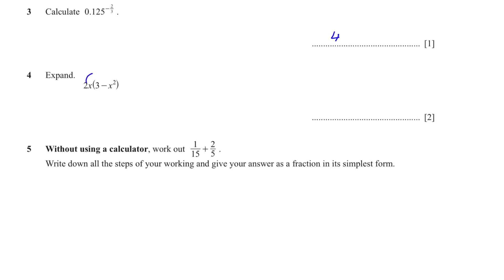Question 4: We have to expand the bracket. We multiply 2x by 3, which gives us 6x, and then 2x multiplied by negative x² gives negative 2x³. When we multiply variables that have exponents, we add the powers.